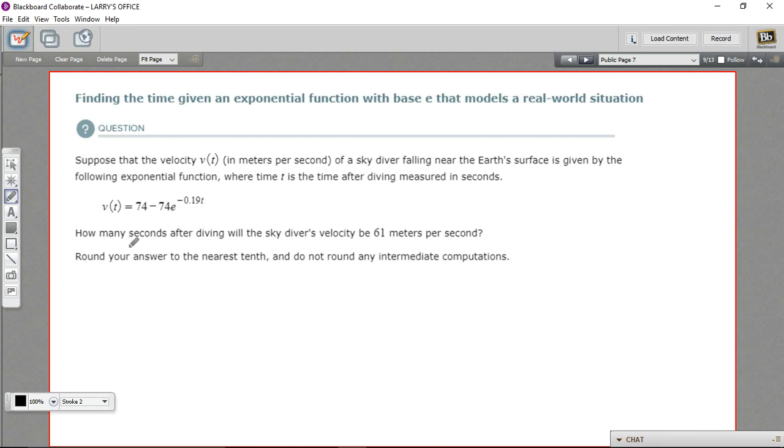The question here says, how many seconds after diving will the skydiver's velocity be 61? So this is v(t). So that's what we're going to plug in here. And they want us to round our answer to the nearest tenth, but not to round any intermediate computations. So let's go ahead and write out this formula with the 61 plugged in for v(t).